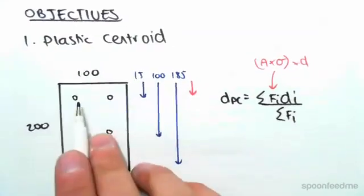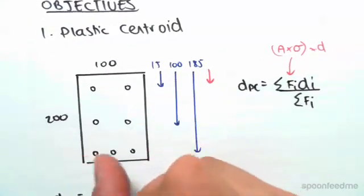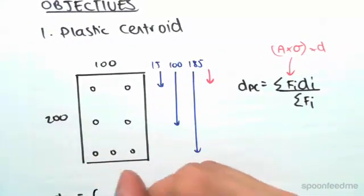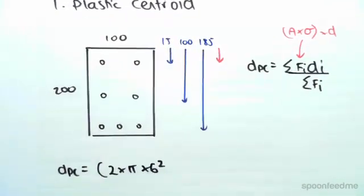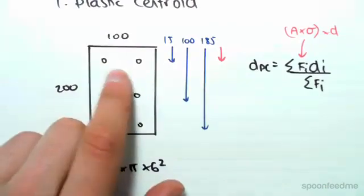So we're going to work with the steel first, we'll work with that layer there. So we have, in terms of area, 2 by pi by 6 squared, so that's how much area of steel we have.